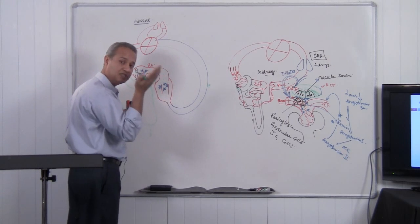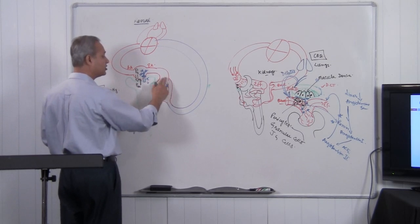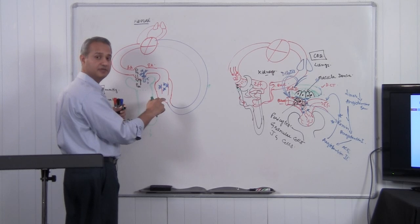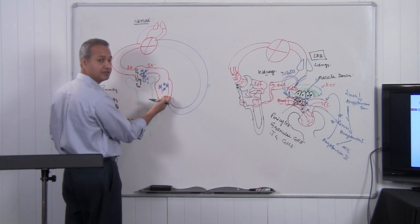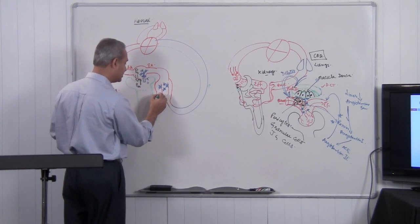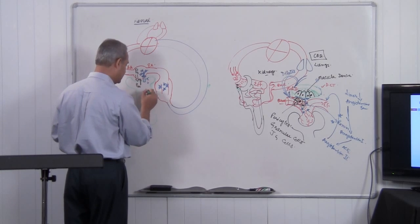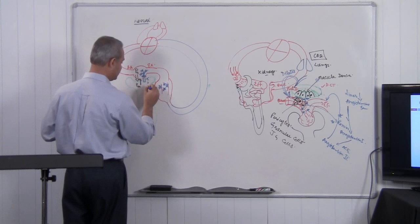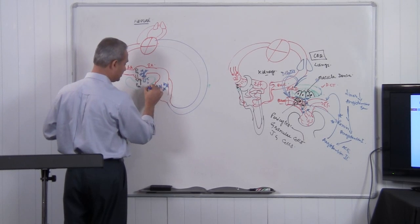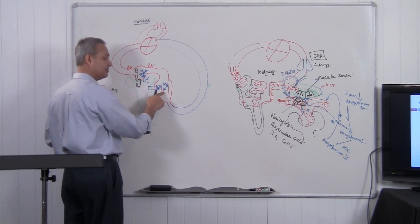So protein concentration has increased, which causes the colloid osmotic pressure here to increase. Hydrostatic pressure here will reduce because there is less fluid coming in — less push outwards. But the plasma oncotic pressure has really increased. So fluid would move from the Bowman's capsule back into the peritubular capillaries. Filtration occurs at the glomerulus and reabsorption occurs at the peritubular capillaries.